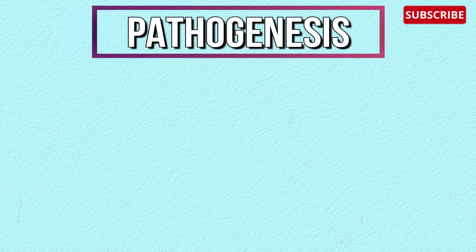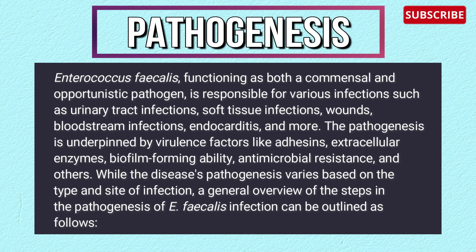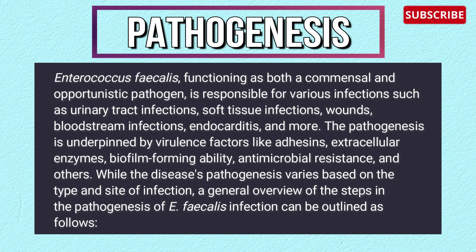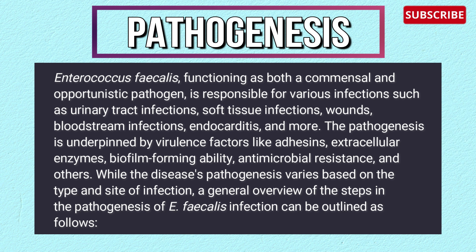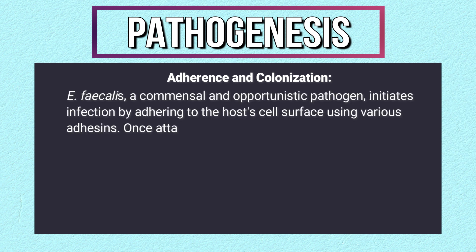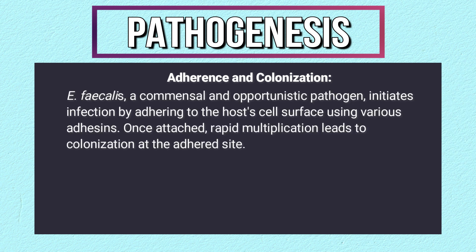Pathogenesis of Enterococcus faecalis infections: functioning as both a commensal and opportunistic pathogen, it is responsible for urinary tract infections, soft tissue infections, wounds, bloodstream infections, endocarditis, and more. The pathogenesis is underpinned by virulence factors like adhesins, extracellular enzymes, biofilm-forming ability, and antimicrobial resistance. A general overview of the infection steps can be outlined as follows.